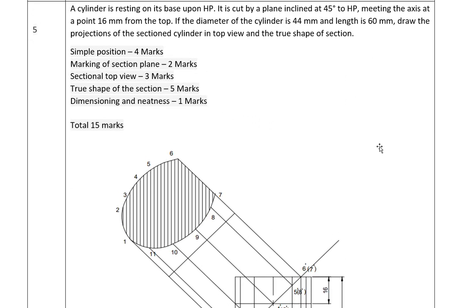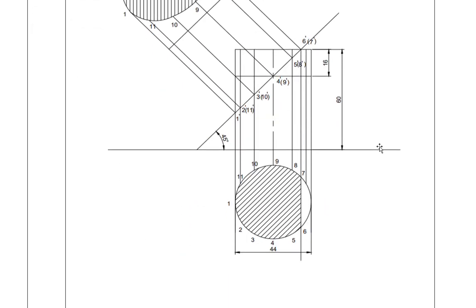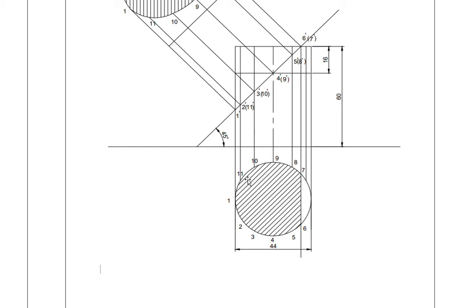Since it is a cylinder of diameter 44mm and height 60mm, the top view is a circle of diameter 44mm and the front view is a rectangle of 60mm height. Draw a circle of 44mm diameter, and divide that circle into 12 equal divisions by taking 30 degrees each.